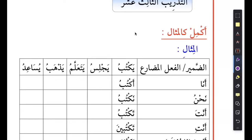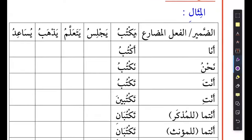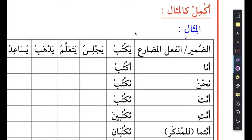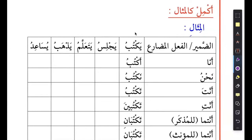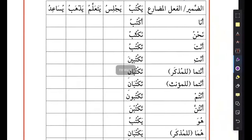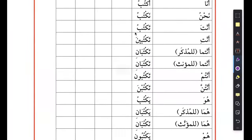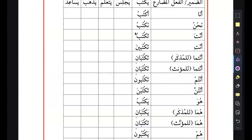Next exercise, we have Tadribul Thalitha wa Ashar, which is the 13th. It says Akmil Kalmithal - complete as the example. So they give you an example, al-mithal. This is something that we've done a lot. I'm not going to be doing these things and these exercises - if you are skipping them, you are hurting yourself.